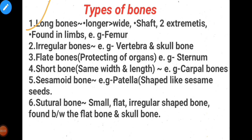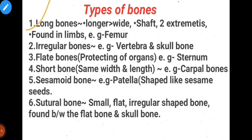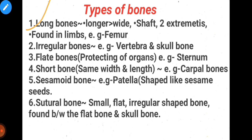Types of bones. Number one: long bones. Long bones are longer and quite strong. They have a shaft and two end portions. They are present in our limbs or extremities. Examples include the femur (thigh), tibia, fibula, ulna, and radius — all are examples of long bones present in our limbs.